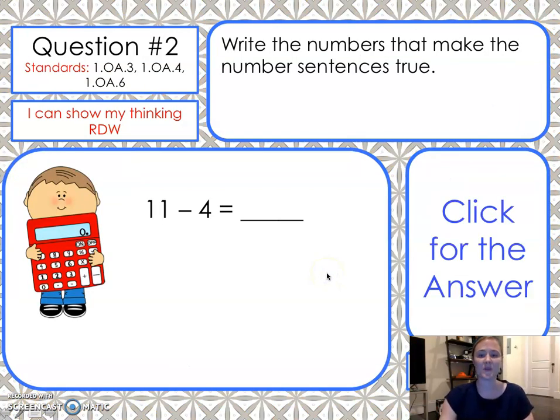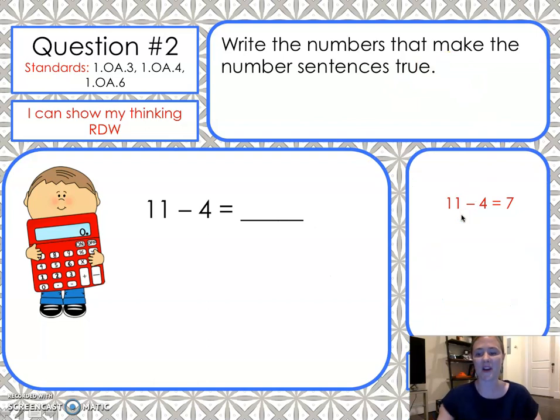Question number two. Write the numbers that make the number sentence true. Eleven takeaway four is... use your take from ten strategy, or you could choose to count on. Go and solve. I'm going to show you the answer now. Please press pause so that you can continue working. All right, here's our answer. Time to check your work. Eleven takeaway four equals seven.